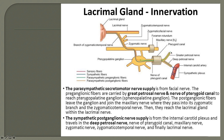These preganglionic parasympathetic fibres come right from the brainstem. There is a superior salivatory nucleus, and then through the nervous intermediarius and then the facial nerve, the fibres travel to the geniculate ganglion of the facial nerve.